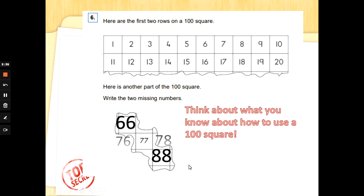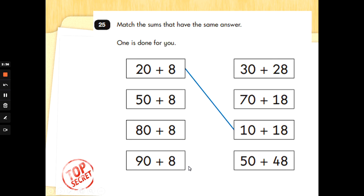Number 25: match the sums that have the same answer. One is done for you. So 20 add 8, 28, is the same as 10 add 18, because one add one 10 is two tens, and zero add eight is eight. So here we're looking for the tens to make the same number of tens.